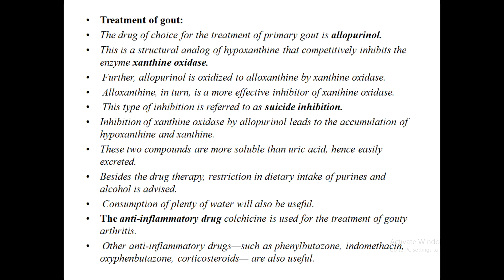The treatment of gout uses allopurinol as the primary drug. Allopurinol is a structural analog of hypoxanthine and competitively inhibits the enzyme xanthine oxidase. Allopurinol itself is oxidized to alloxanthine, which inhibits xanthine oxidase — this type of inhibition is known as suicide inhibition. Allopurinol causes accumulation of hypoxanthine and xanthine, which are more soluble than uric acid, making it the best drug for treating gout.